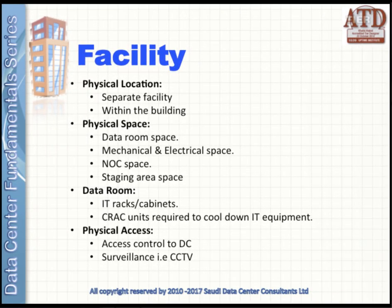Facility components are very important and include the following areas. First, the physical location — the data center can be a separate facility by itself or within the same building. For physical space: the data room houses the IT equipment; the mechanical/electrical space houses cooling and electrical panels, UPS, and its batteries; the NOC space is allocated outside the data center for operators to monitor activities; and the staging area is used to unpack new IT equipment before deploying it into the data center.